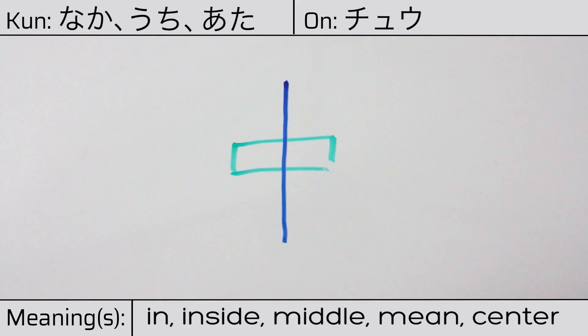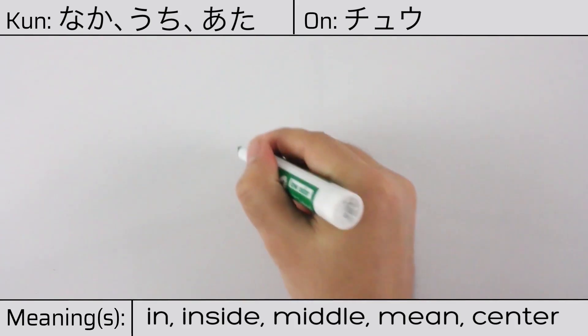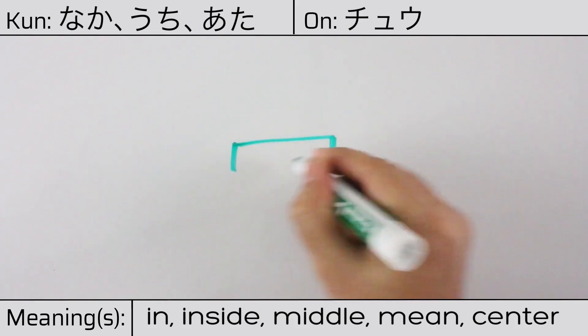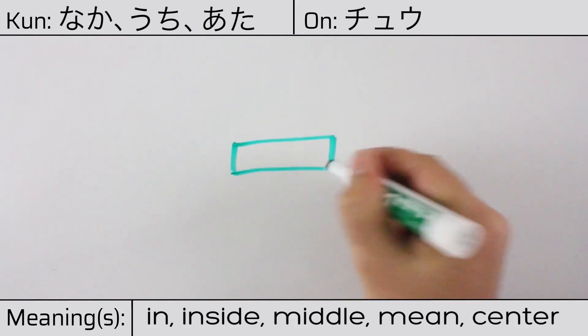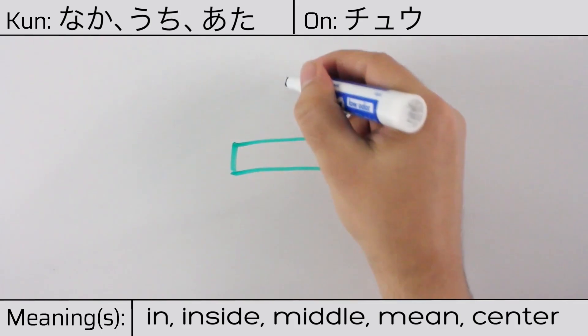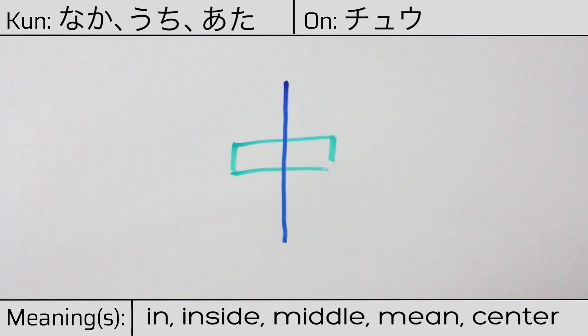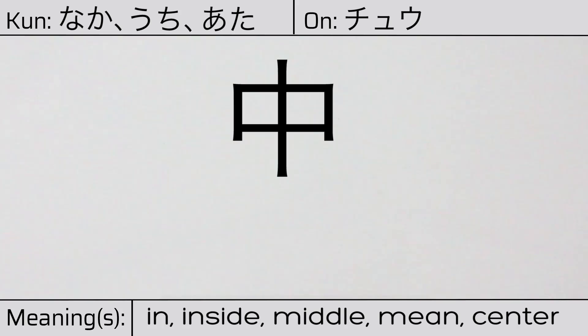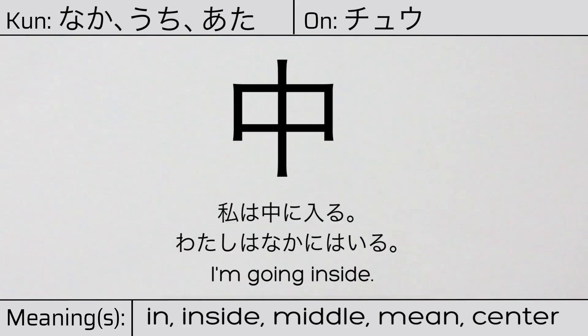You can remember this kanji by the following hint: something inside a hole. Or, because the line is in the middle, it should be easy to remember as middle or center. Our example sentence is: Watashi wa naka ni hairu — I'm going inside.